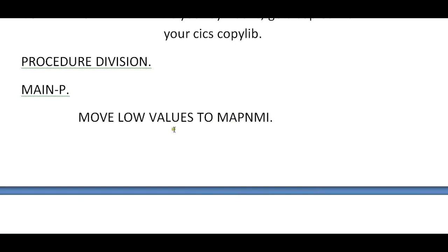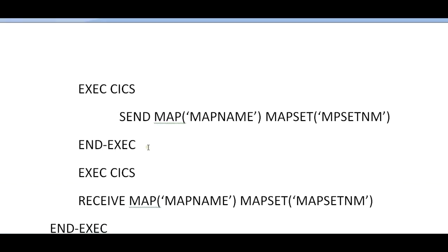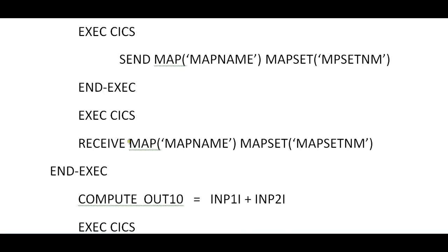Coming into the PROCEDURE DIVISION: MOVE LOW-VALUES to the map name input. This passes all zeros, ensuring there are no junk values passed to the variables. Now EXEC CICS SEND MAP — I'm sending the map onto the CICS screen with that particular map name and map set name. In the same way, EXEC CICS RECEIVE MAP with map name and map set name.